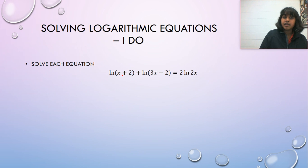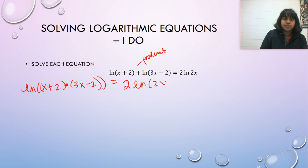So in this one, again, we really do want to get it down to as simplified as possible. So in this particular instance, why not put these together since this is the product rule? So this becomes the natural log of X plus two times three X minus two is equal to two natural log of two X. Well, this two can be brought back up and made into two natural log of two X squared. And this two becomes two natural log of four X squared because this two becomes two squared. And this is just X squared.